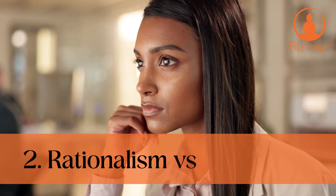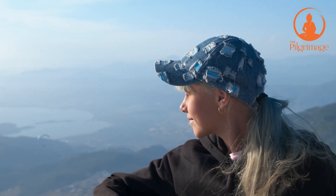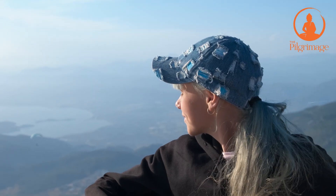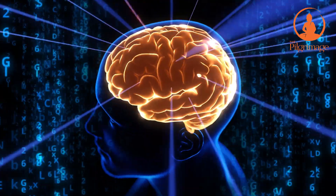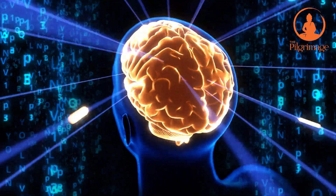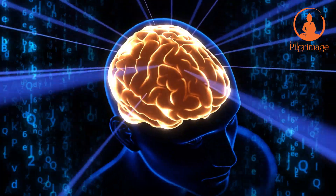Issue 2: Rationalism vs. Empiricism. How should we discover the truth about ourselves and about the world around us? Should we do so by trying to reason logically based on what we already know? Or should we do so by observing and testing our observations of what we can perceive through our senses? And how can we combine theory with empirical methods to learn the most we can about cognitive phenomena?